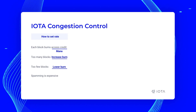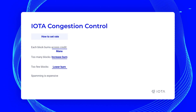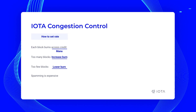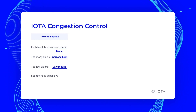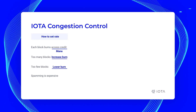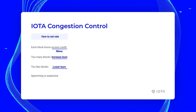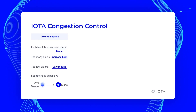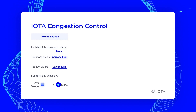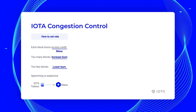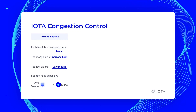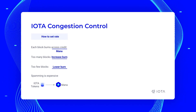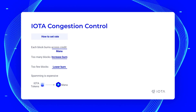This effectively makes spamming expensive. If you just start spamming the network and overusing it, the burn increases. The mana burn you have to do just keeps increasing until it becomes way too expensive, way too fast. How do we get mana? Mana is generated by the IOTA token — you own tokens and that generates mana, which allows you to create blocks to access the network. The amount of blocks you're able to create is proportional to the number of IOTA tokens you have. That's why IOTA is feeless for token holders.